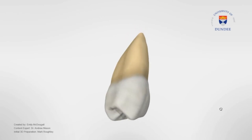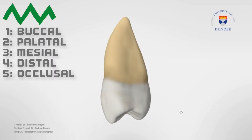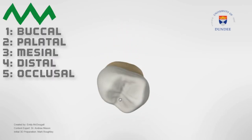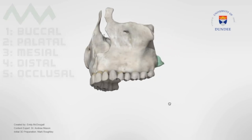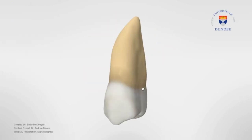And as always, we'll look into the morphology from all these different angles, and the tooth you're looking at right now is the left maxillary second premolar.